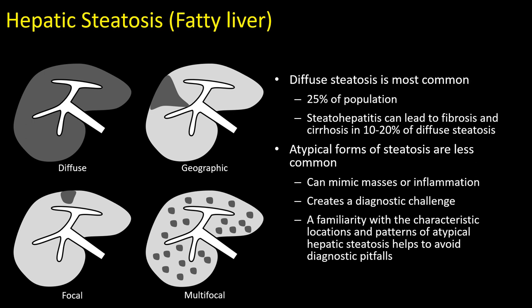There are different forms of hepatic steatosis, with diffuse steatosis being the most common pattern. Approximately 25% of the US population can be found to have some form of diffuse steatosis. Steatohepatitis, which is inflammation related to diffuse steatosis, can lead to fibrosis and cirrhosis in about 10% to 20% of patients. Other more atypical forms are not as common and can be a diagnostic challenge because they can appear wedge-shaped, mass-like, or multifocal, and can be confused with other pathologic entities.